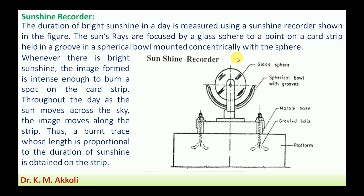Whenever the sun's radiation falls, it burns a spot on the card strip. As the sun moves, the spot of burning continuously moves along the strip. The length of the burnt spot on the card strip is proportional to the duration of sunshine availability. For the duration when there is bright sunshine, the card strip is burned, and the length of the burn is proportional to the sunshine availability.